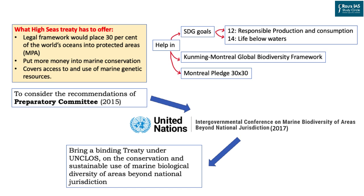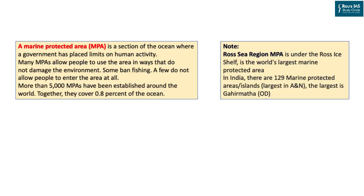The treaty lays down a legal framework to put 30 percent of the world's oceans under marine protected areas. A marine protected area is a section of the ocean where the government has placed limits on human activity — exploration and transportation are highly restricted. However, people may work there as long as they do not damage the environment. Some nations have completely banned fishing in their MPAs, while others allow entry. Currently, there are around 5,000 marine protected areas covering about 0.8 percent of ocean surface.